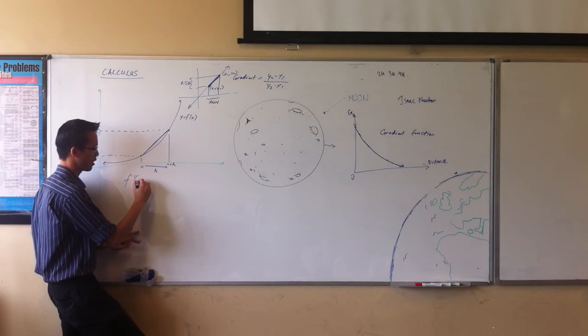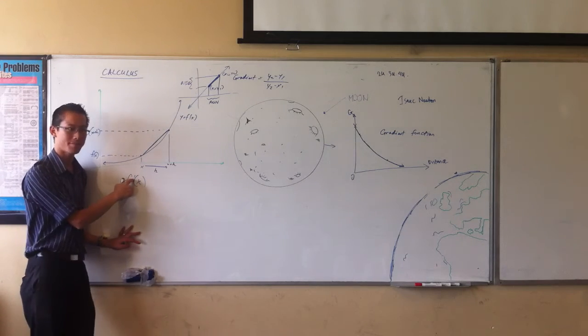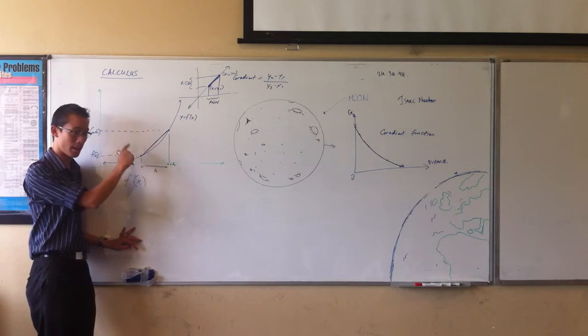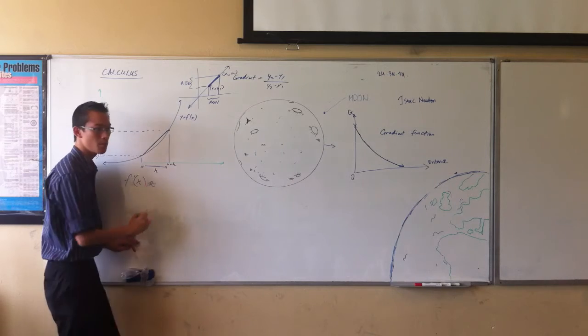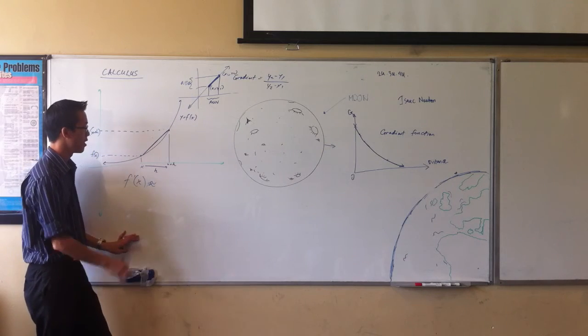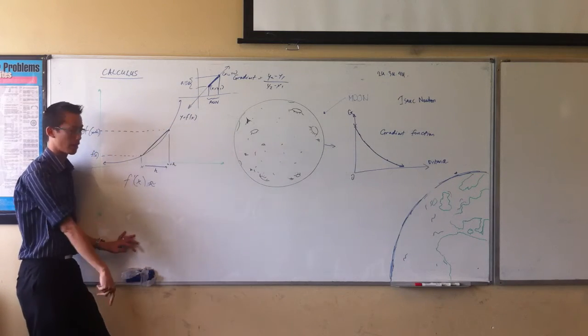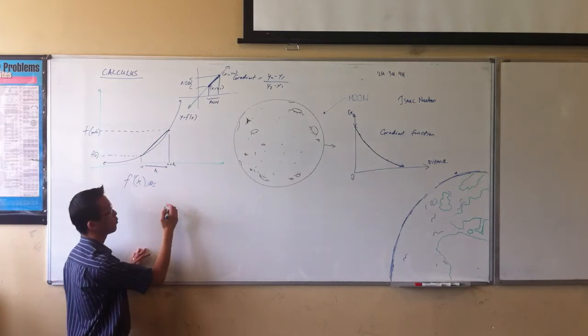So, he said, look, the gradient, which he denoted with a dash. So, that's not a 1, it's an f and a dash. I'd say f dash. He said, that's approximately equal to rise over run of this straight line. It's not the same, but it's close.